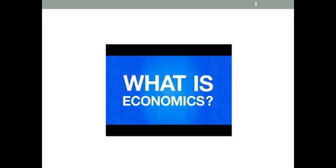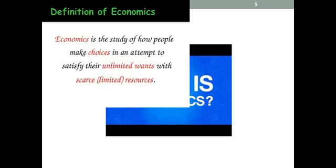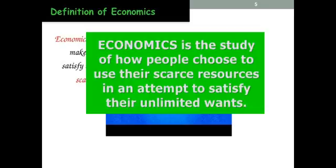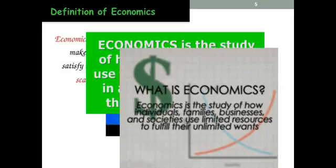So what exactly is economics? There are several definitions out there, but they all pretty much amount to the same thing. Economics is a study of how people make choices in an attempt to satisfy their unlimited wants with scarce or limited resources. Another option: it's a study of how people choose to use their scarce resources in an attempt to satisfy their unlimited wants. And it's the study of how individuals, families, businesses, and societies use limited resources to fulfill their unlimited wants. It all basically boils down to the same thing: economics studies choice. We must make choices because there is limited stuff that we have, and we have all of these wants that are unlimited.